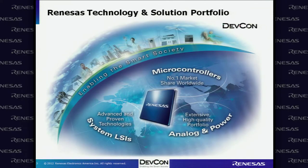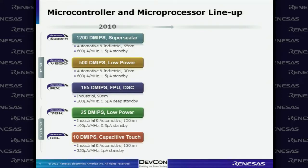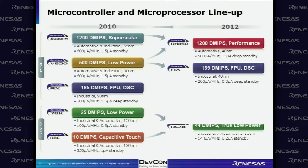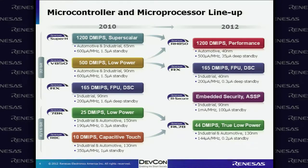You've probably seen this slide at least once. The part we're going to look at today is our microcontroller line — we're not going to talk about the system LSIs and the analog and power. As far as the lineup, except for the secure MCU, this is analog fundamentals. It's going to cover any of these MCUs, so it's not specific to RL78, RX, or the RH850.